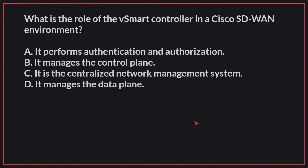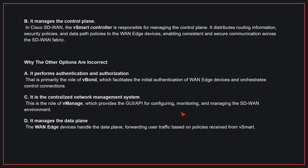What is the role of the vSmart controller in a Cisco SD-WAN environment? The correct answer is B. In Cisco SD-WAN, the vSmart controller is responsible for managing the control plane. It distributes routing information, security policies, and data path policies to the WAN-edge devices, enabling consistent and secure communication across the SD-WAN fabric.